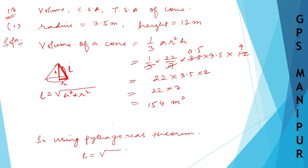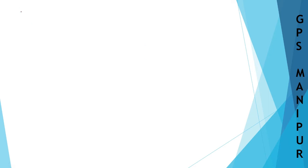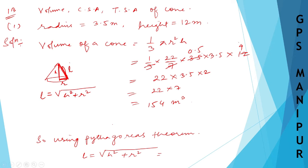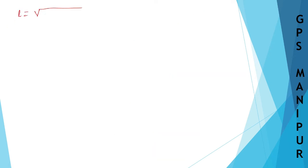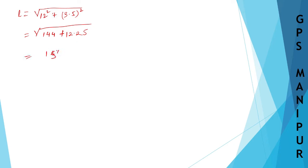Using Pythagoras theorem, l = √(h² + r²). With h = 12 and r = 3.5: l = √(12² + 3.5²) = √(144 + 12.25) = √156.25.